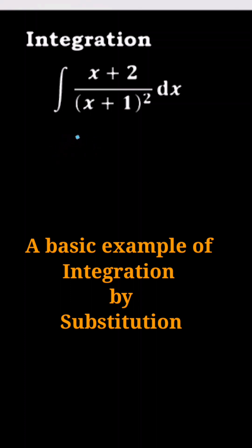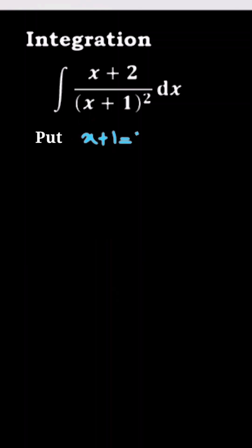For that, you have to substitute the value of x plus 1 by z, so put x plus 1 equal to z. Now differentiate both sides with respect to x; you will get dx equal to dz.